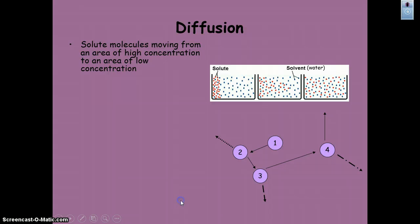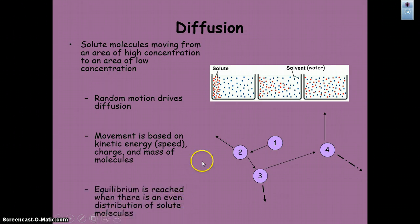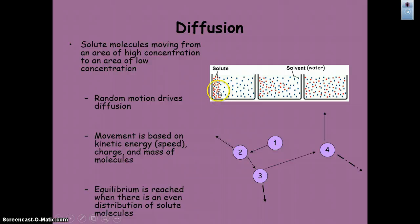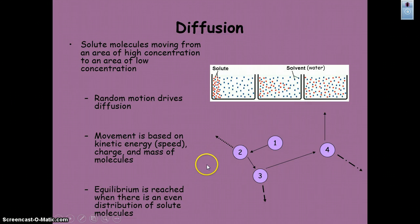Diffusion is the movement of molecules from an area of greater concentration to an area of lesser concentration until we reach equilibrium. In the diagram here, we have the solute in red and the solvent in blue. We can pretend the solute is like a dye dropped into water — it moves from an area of greater concentration using Brownian motion, random movement, and kinetic energy to lesser concentration until we reach dynamic equilibrium, where there are equal numbers of molecules spread throughout the solution.